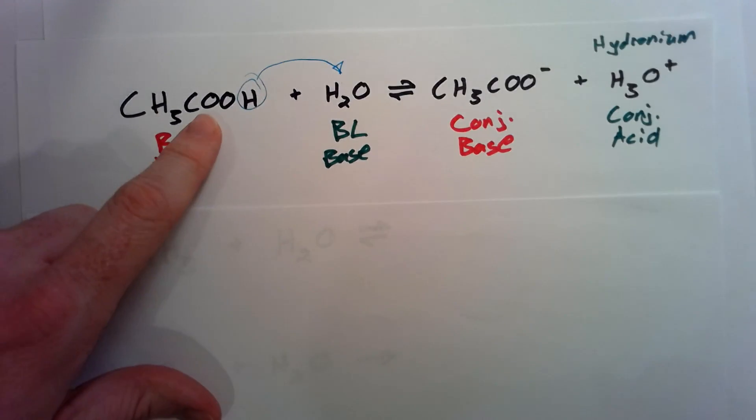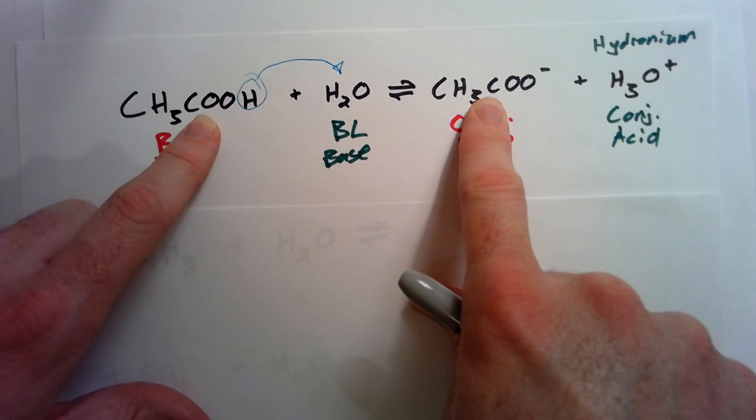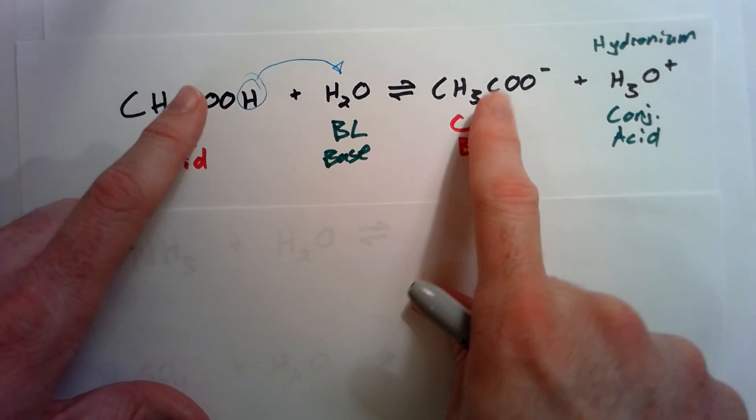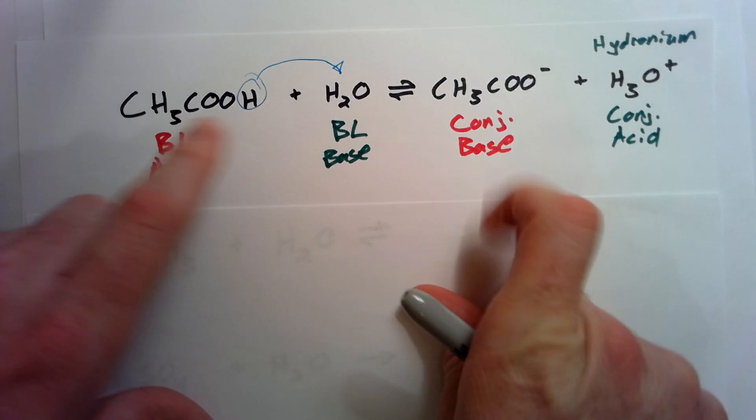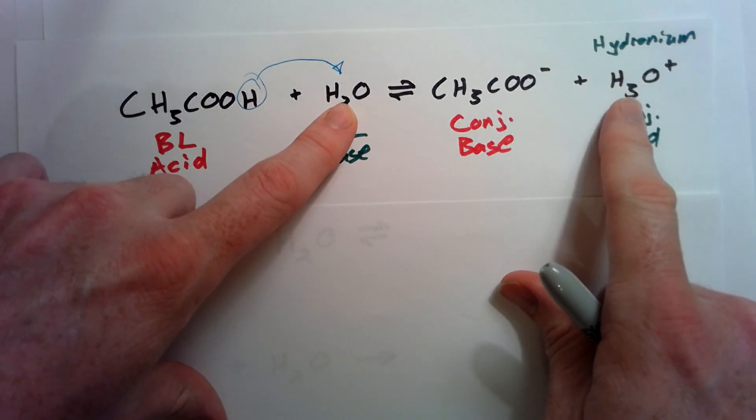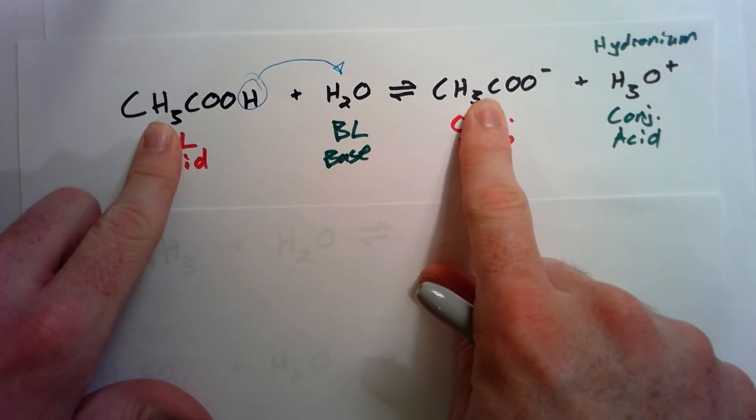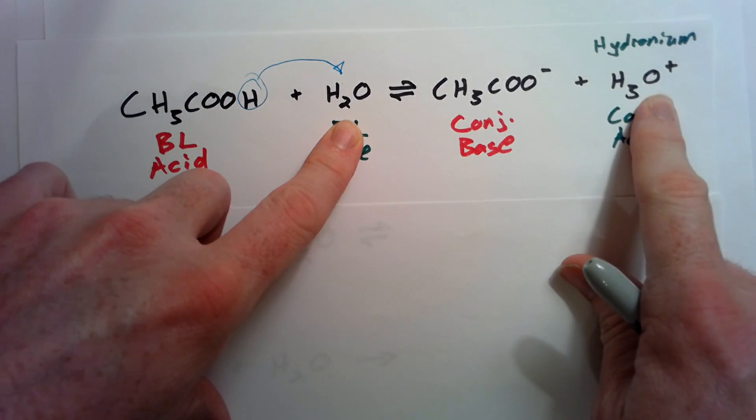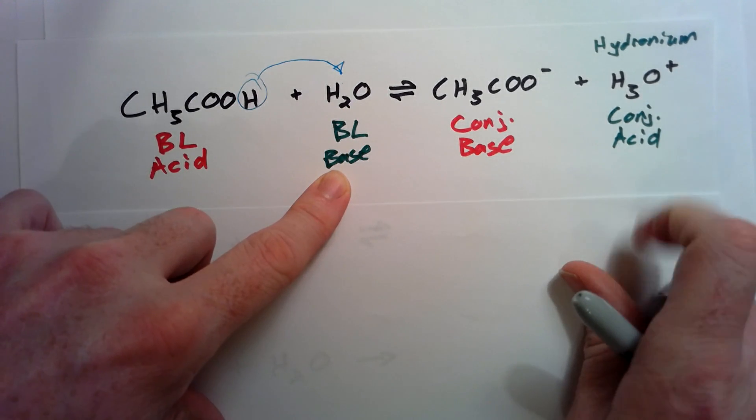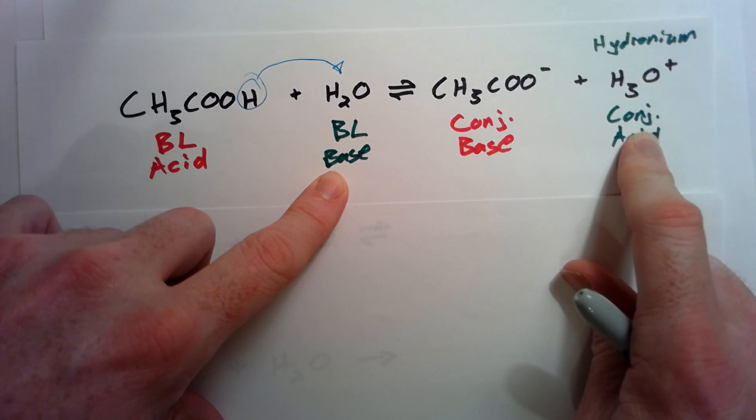What you are going to try to do is you're going to try to see which one looks the most similar. This one looks like this one, and this one looks like this one. They are the correct pairs. This is a pair, and this is a pair. The Bronsted-Lowry base and the conjugate acid base pair.